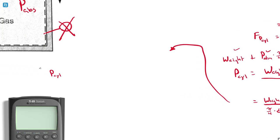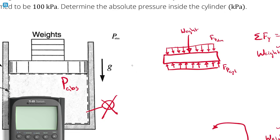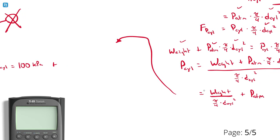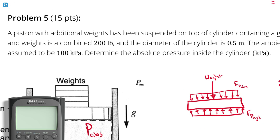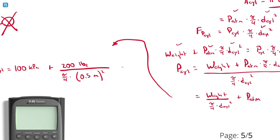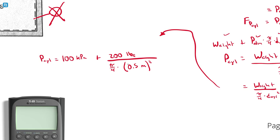Now substituting numbers. The pressure inside the cylinder equals atmospheric pressure — given as 100 kilopascals — plus the weight of 200 pound-force divided by pi over four times the diameter of 0.5 meters squared. This is a large piston-cylinder arrangement, so 0.5 meters squared. The weight is in pound-force, so I need to convert to get consistent units in kilopascals.